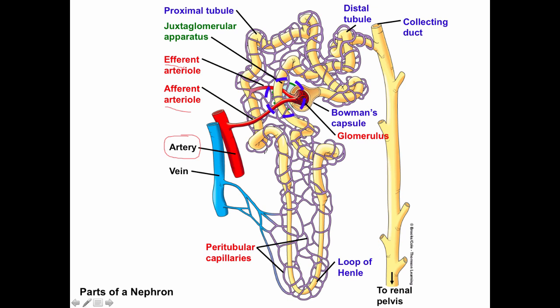After the blood has finished exchanging with the tubule, the peritubular capillaries drain blood into a tiny branch of the renal vein, which merges into the large renal vein and then drains into the vena cava.